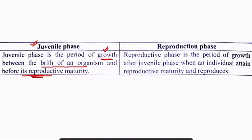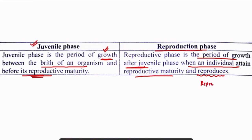The second one is the reproductive phase. The reproductive phase is the period of growth after the juvenile phase, when an individual attains reproductive maturity and reproduces. Here, both reproduction and growth take place, whereas in the juvenile phase, only and only growth takes place.